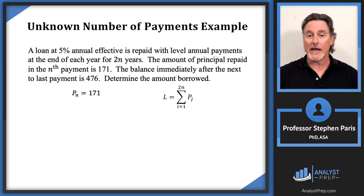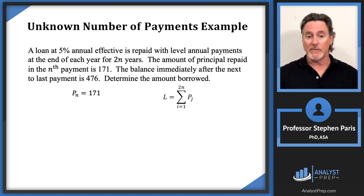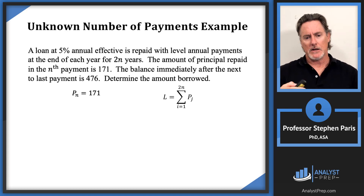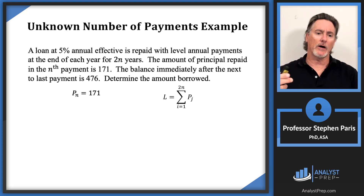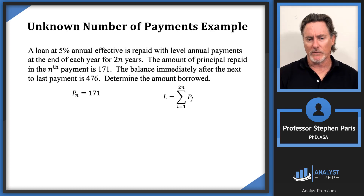If I could get all of the principal repaid values P_k, then L would just be the sum of all of them. Note that there are not n payments but actually 2n payments — level annual payments for 2n years — so the index on that summation ranges from 1 up to 2n.